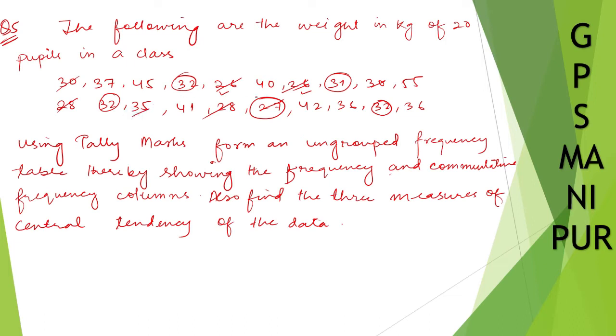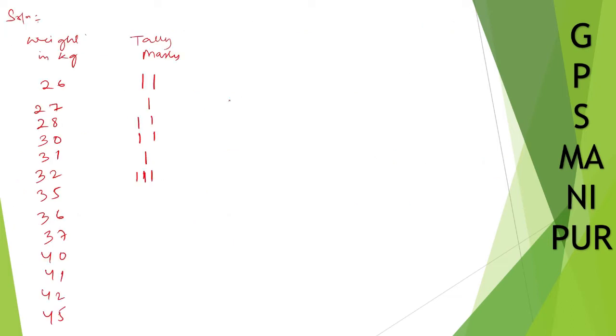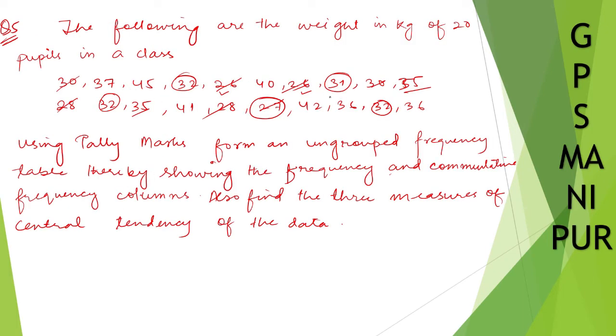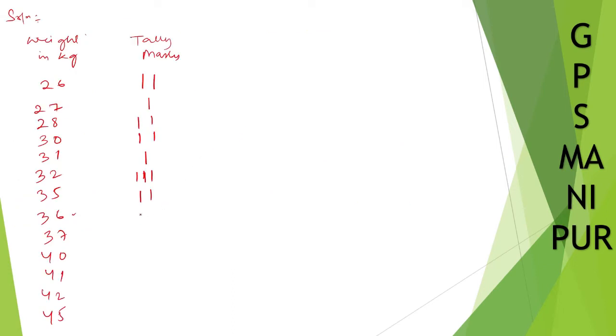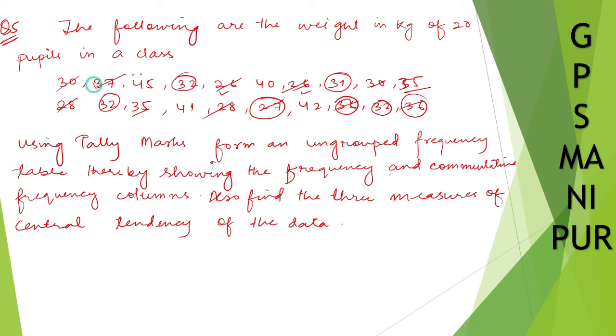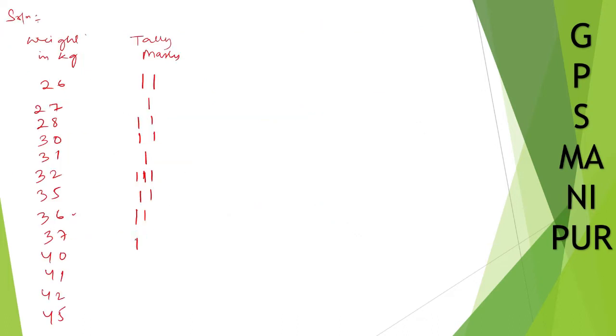How many 32? One, two, three. So 32 is 3. How many 35? Two. How many 36? Two. How many 37? One. No 38, no 39. 40 is one. 45 is one, 41 is one, 42 is one. So rest are all 1 from 37 onward.